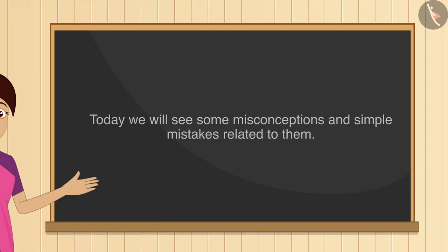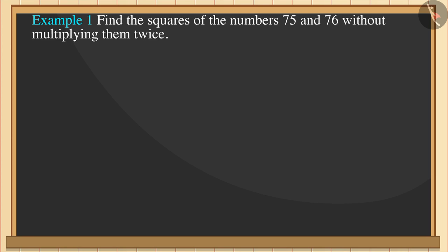Let's see an example. Find the squares of the numbers 75 and 76 without multiplying them twice. You can pause the video and think about your answer.